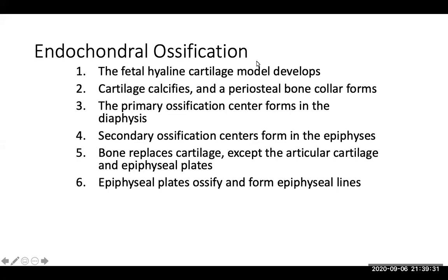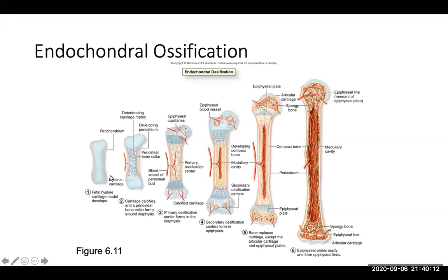In endochondral ossification, the fetal hyaline cartilage model develops in the fetus. Cartilage calcifies and a periosteal bone collar forms. The primary ossification center forms in the diaphysis region, and secondary ossification centers form in the epiphyses. Bone replaces cartilage as it grows, except for articular cartilage, which is maintained, and the epiphyseal plates — the growth plates. Epiphyseal plates eventually ossify and form what we call epiphyseal lines. The process proceeds from fetal cartilage through a primary ossification center, eventually forming compact bone, the medullary cavity, and a mature adult bone.